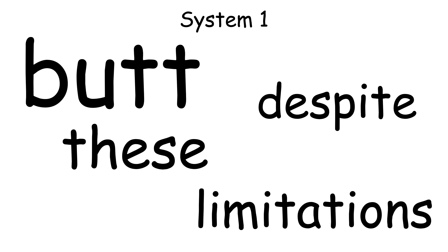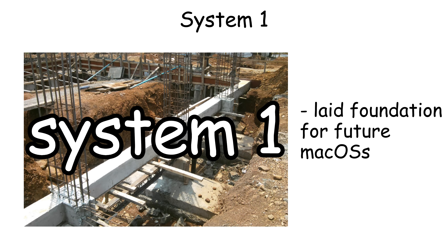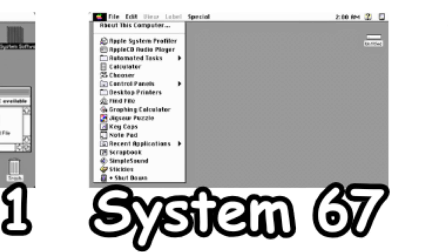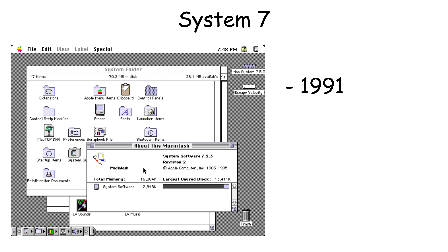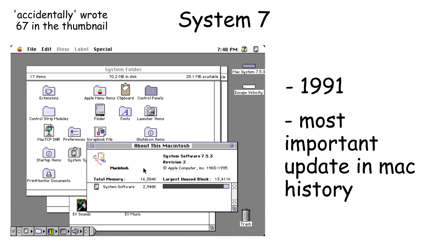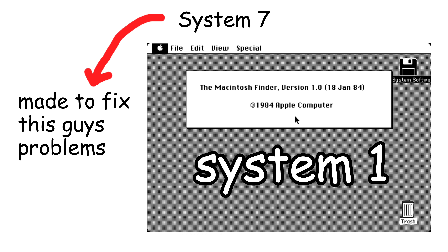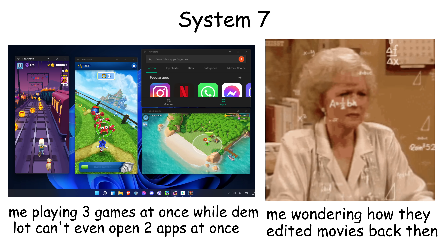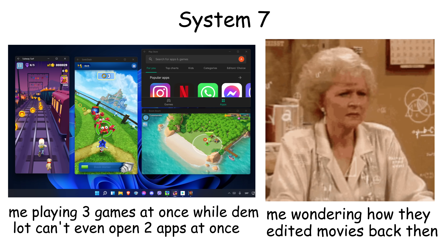But despite these limitations, System 1 laid the foundation for all future Mac operating systems. System 7 was released in 1991, and it's considered to be one of the most important upgrades in Mac history. It was developed to address the major limitations of earlier systems, particularly the inability to run multiple programs simultaneously.